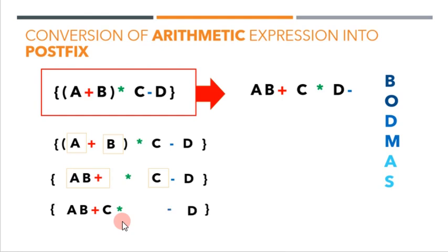Now it's time to take the last operation, the subtraction. What are the operands? Put them together and place the minus symbol after. That's how we convert an arithmetic expression into polish strings manually using the BODMAS rule.